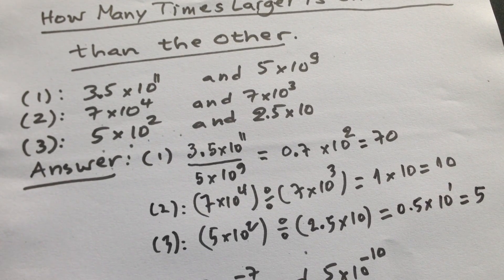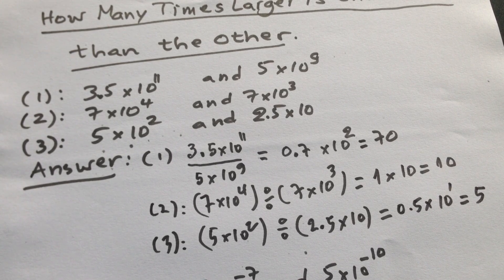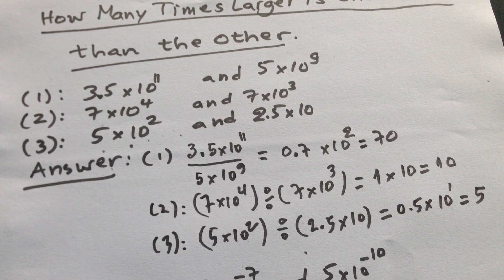So it means that 5 times 10 squared is greater than 2.5 times 10 by 5 times.